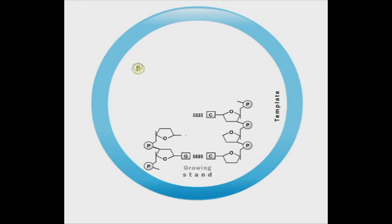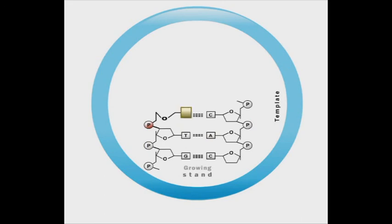Therefore, Acyclovir triphosphate competes with guanosine and incorporates into the newly developed viral DNA strand, disturbing its elongation.